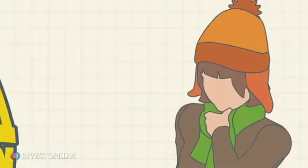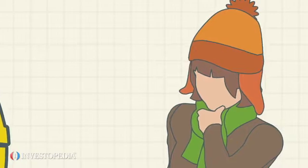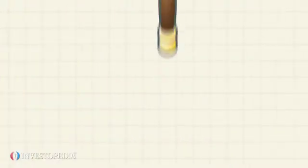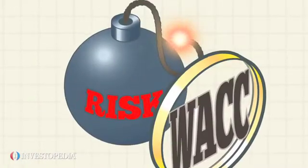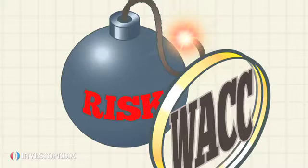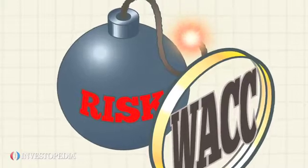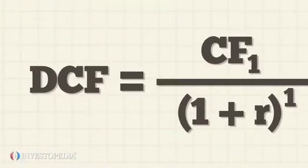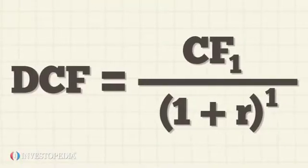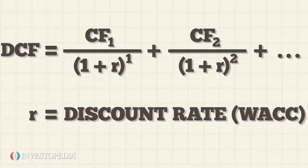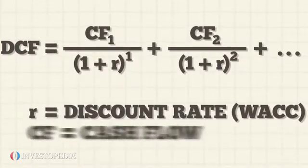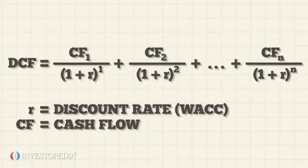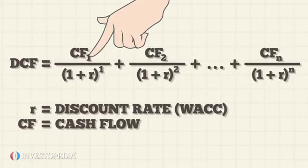Jane then looks for the company's weighted average cost of capital, or WACC, which reflects the risk of the cash flows, and uses it as the discount rate for the DCF formula, where R is equal to the discount rate and CF is Miranda Cruises' future cash flows in multiple periods.